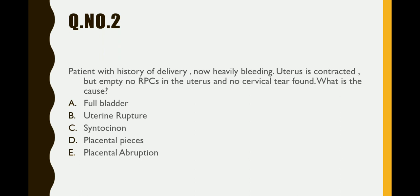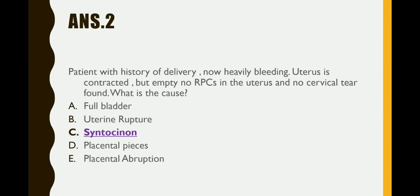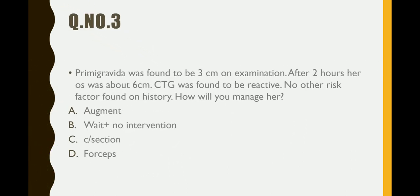The key point is that the uterus is contracted and there are no retained products of conception. A relaxed uterus would suggest full bladder, RPCs, or placenta pieces, but since the uterus is contracted, the best answer is syntocin (oxytocin), which can also cause heavy bleeding. The answer is syntocin.